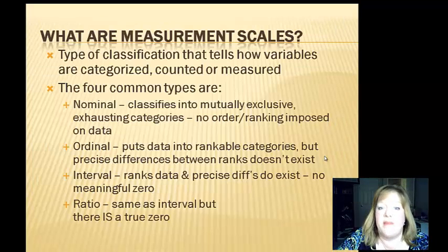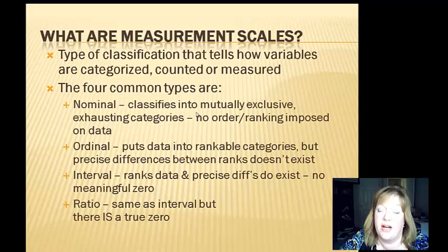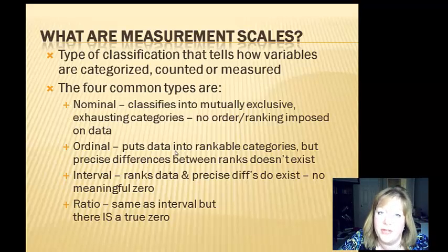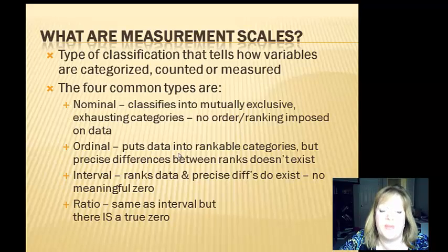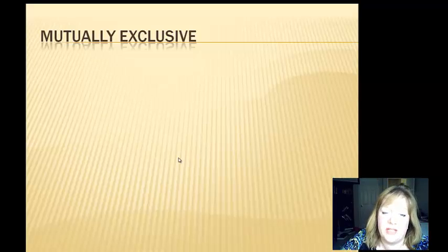What are measurement scales? This is a type of classification that tells how variables are categorized, counted, or measured. There are four common types. Nominal classifies data into mutually exclusive, exhaustive categories with no order or ranking imposed. Ordinal puts data into rankable categories, but precise differences between the ranks don't exist. Interval data ranks data and precise differences do exist, but there is no meaningful zero. Ratio is the same as interval — ranks data with precise differences — but there is a meaningful true zero.